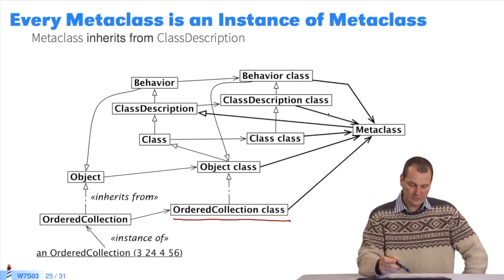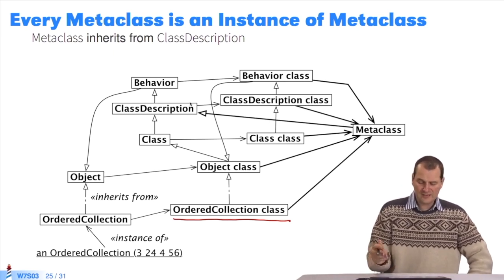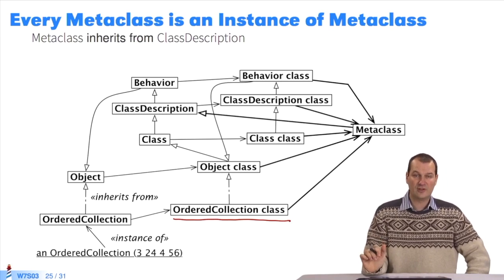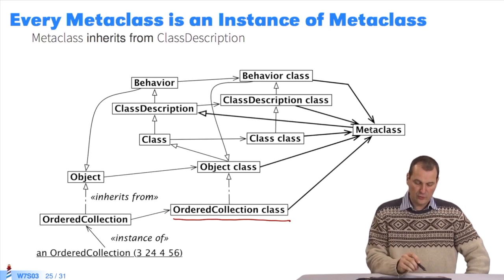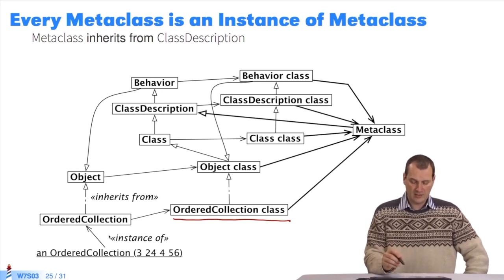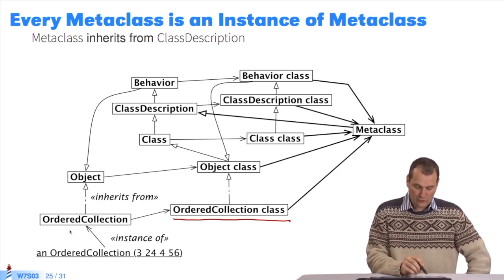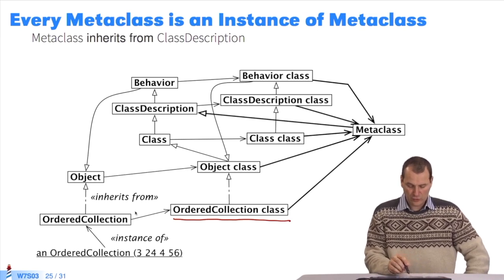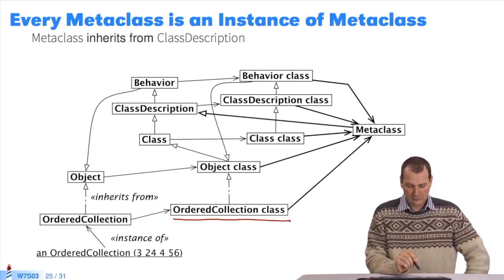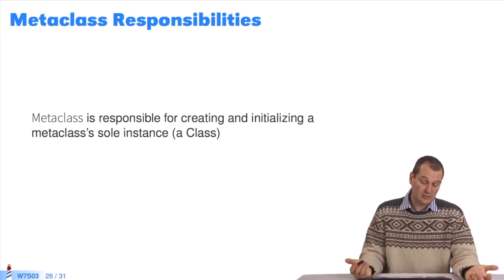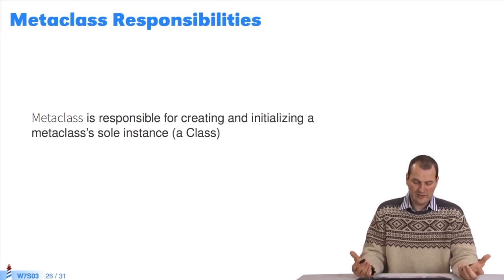Furthermore, metaclass inherits from class description. It's an unusual class because it only has one instance. And you can't name it because its name is defined by its instance. That may seem barbaric. So we see that ordered collection is an instance of ordered collection class, which takes its name. All metaclasses are instances of metaclass. In the code, the main responsibility of metaclass is to create and initialize a single instance of itself.